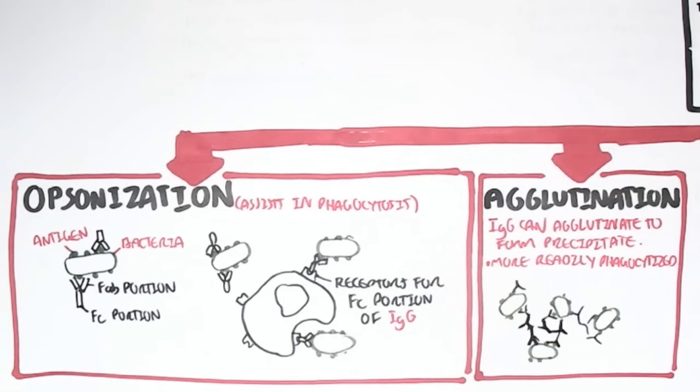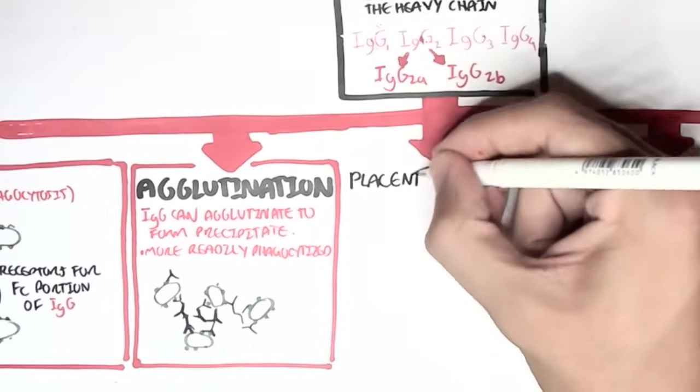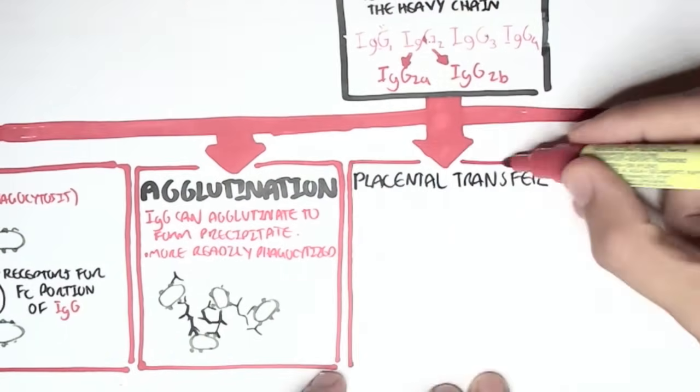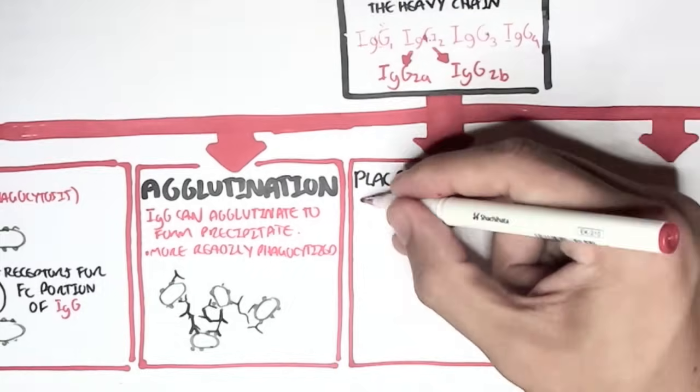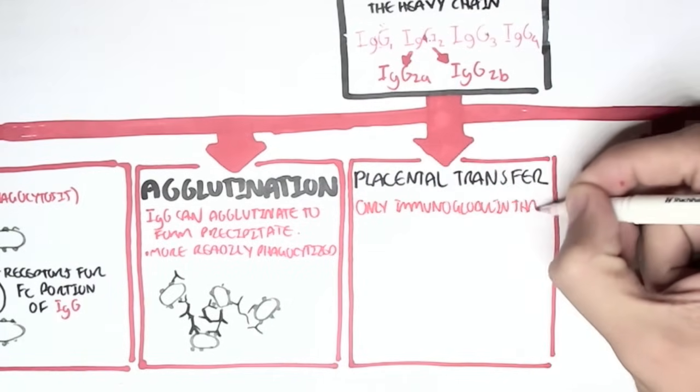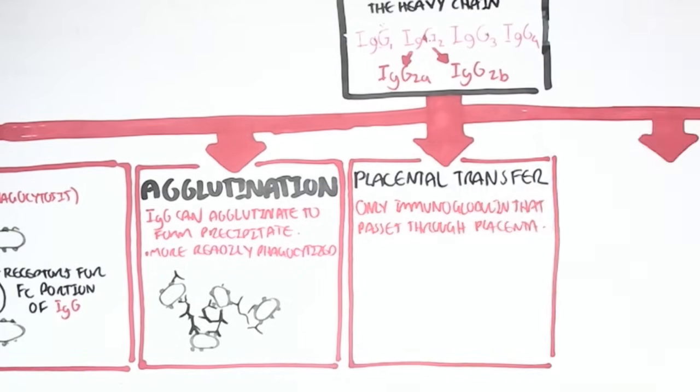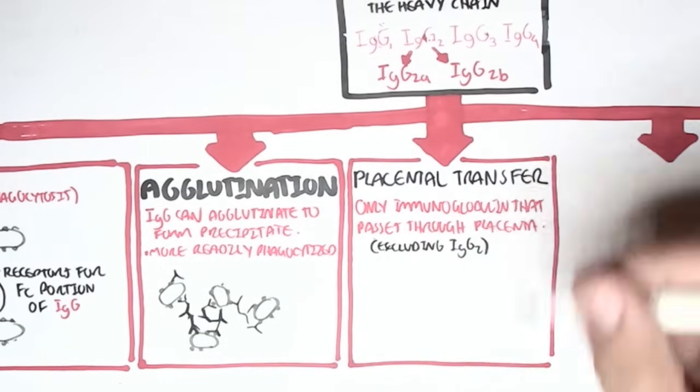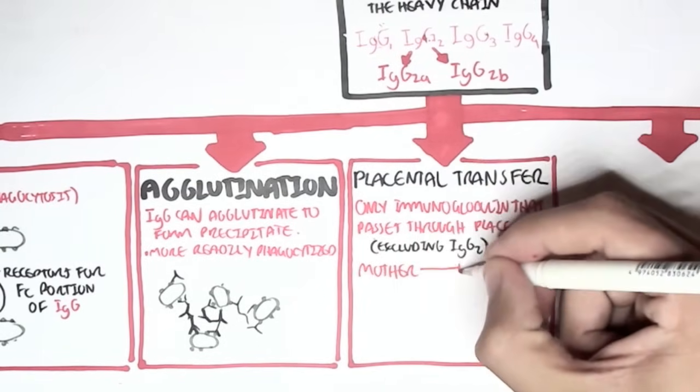The most important thing I think to take in about IgG is that it actually works, it actually transfers to the placenta. Because it is the only immunoglobulin that actually passes through the placenta, excluding IgG2. So what this means is that the mother, for example,